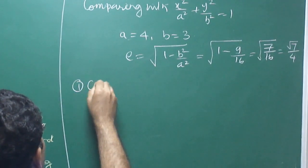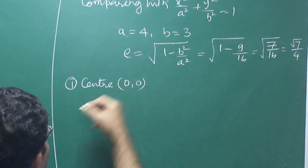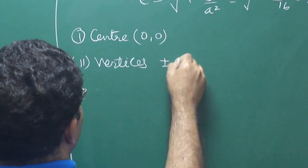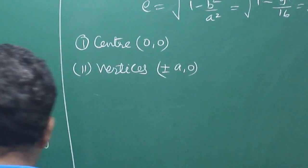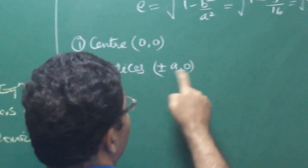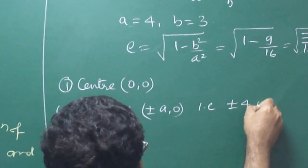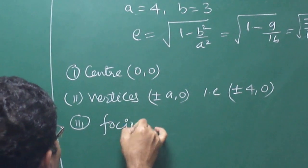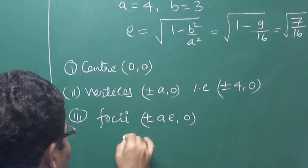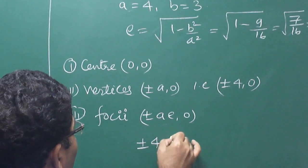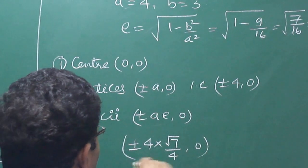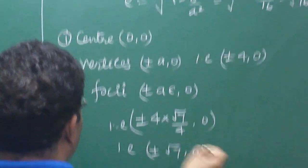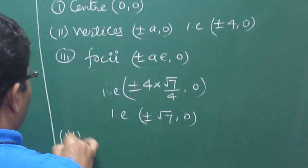Now, the center in this general equation is (0, 0). The vertices are at plus minus a, 0 — since A is greater than B, vertices are (plus minus 4, 0). The foci are at plus minus ae, 0, that is plus minus 4 times root 7 by 4, which gives foci at (plus minus root 7, 0).